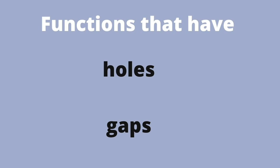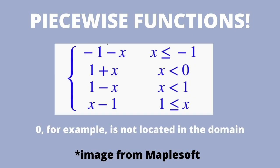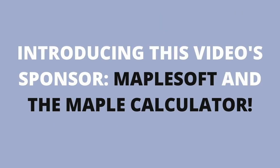Functions that may have holes or gaps are called piecewise functions. To find the domain and range, you could plot it on a graph or look at all the different pieces and find out where certain values and points are left out.